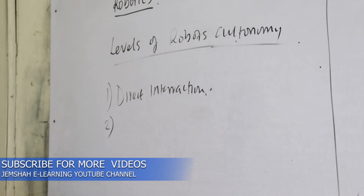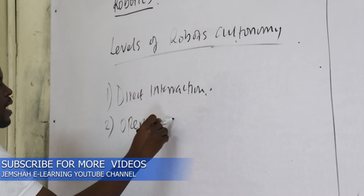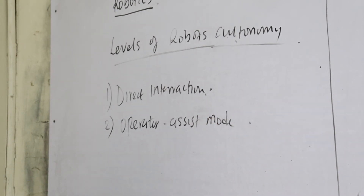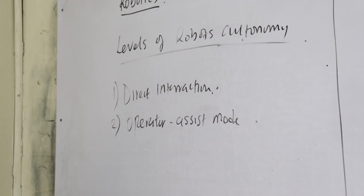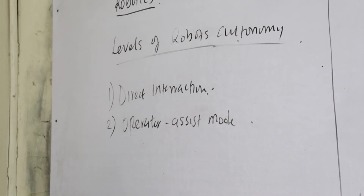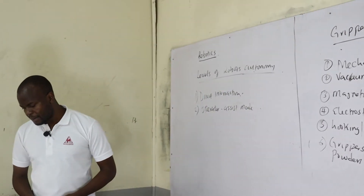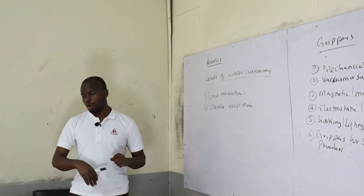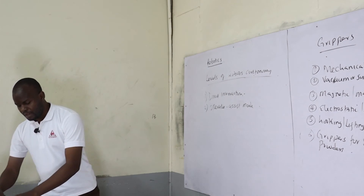The second level of autonomy is what we refer to as operator assist mode. We usually leave the medium to high level tasks for the operator, while low level tasks can be done by the robot. The operator commands high to medium tasks with the robot automatically figuring out how to achieve them, while the robot is able to carry out low level tasks on its own.